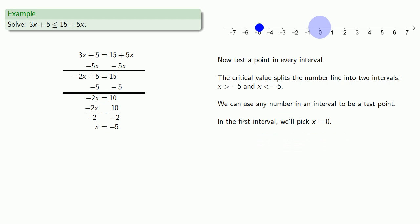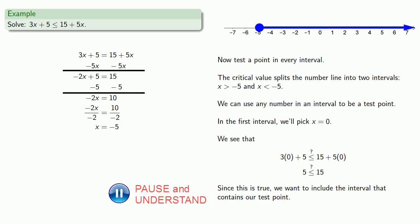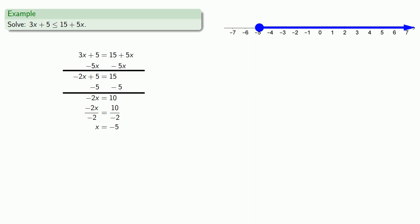So we'll see if 0 satisfies our inequality, so we'll substitute 0 into our inequality relationship. And, since this is a true statement, we want to include the interval that contains our test point. To keep track of this, we'll shade that interval.